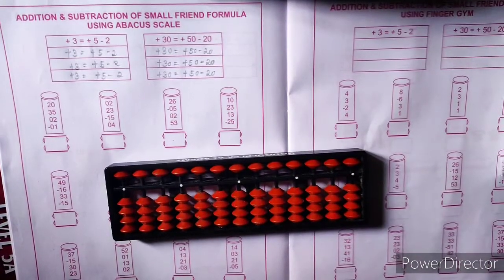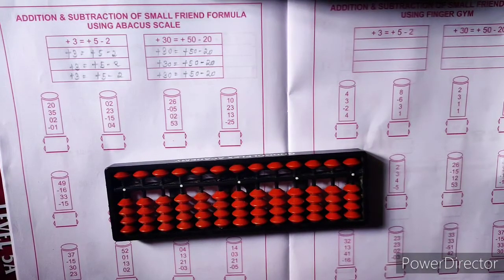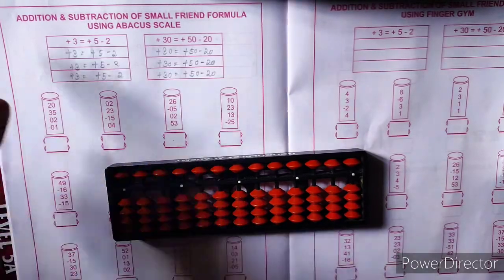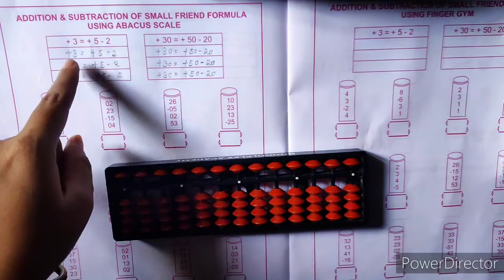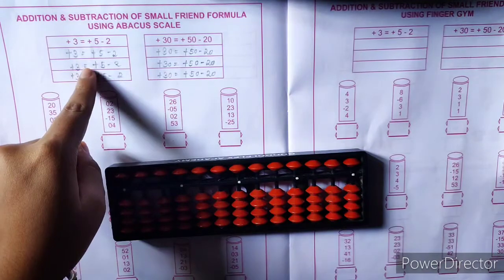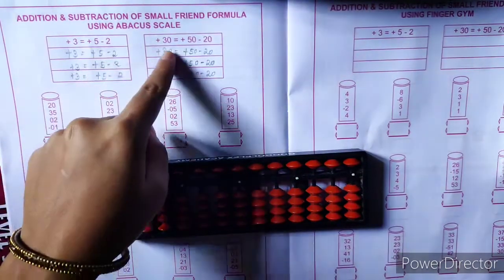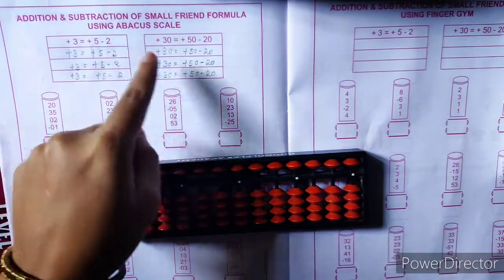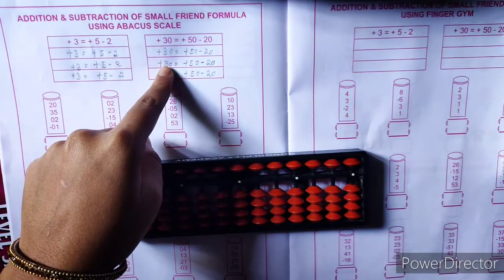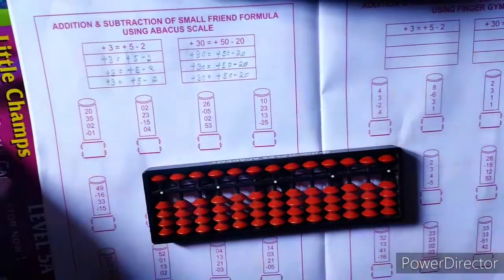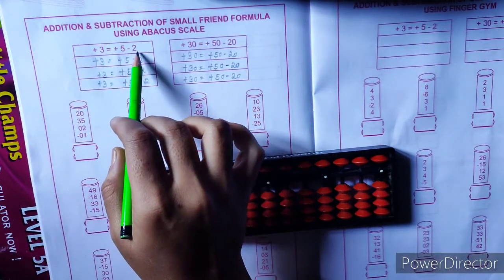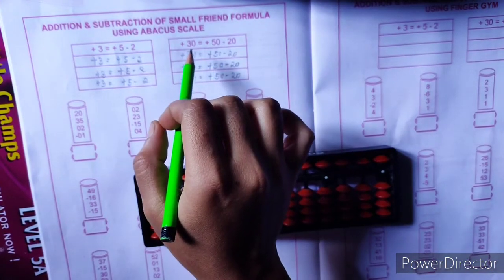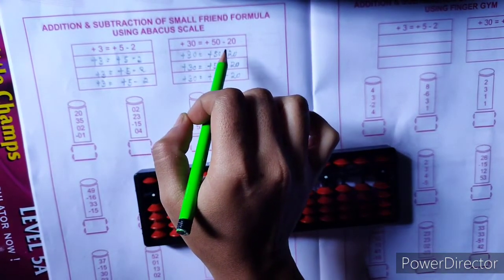Good morning children. In my previous video I had explained about the plus 4 formula, and today I will teach you the use of the plus 3 formula. So before starting the sums, you have to write the formulas 3 times — for 1 space and for 10 space. Plus 3 formula is equal to plus 5 minus 2 for 1 space, and plus 30 formula is equal to plus 50 minus 20 for 10 space.